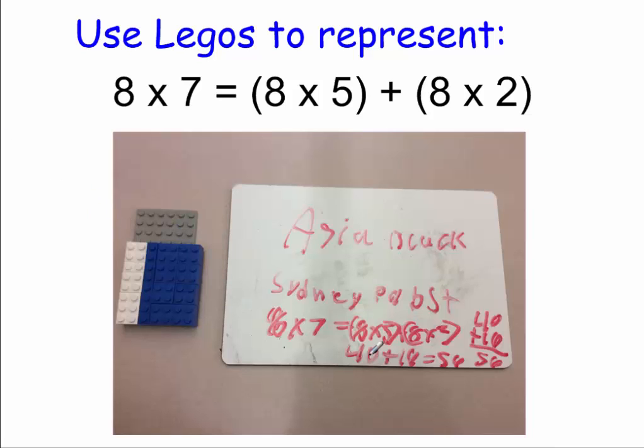When we look at Asia and Sydney's work, they do it very similarly. They were able to break apart 8 times 5 into 40, 8 times 2 into 16, and they add those together, and that's represented in their array. There's my 8 times 5. There's my 8 times 2. So by breaking apart 8 times 7 into two facts that they're fluent with, they're able to solve for that fact quicker.